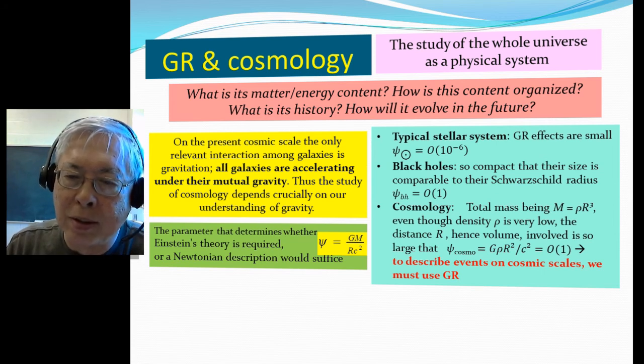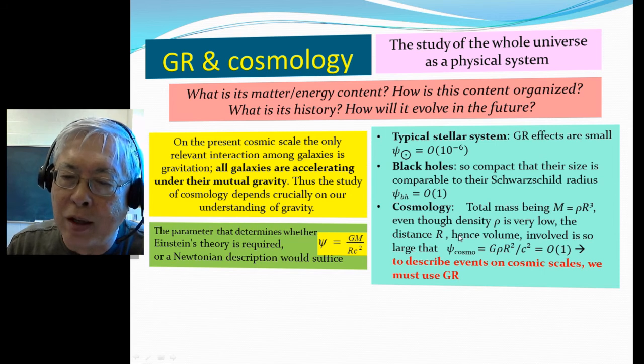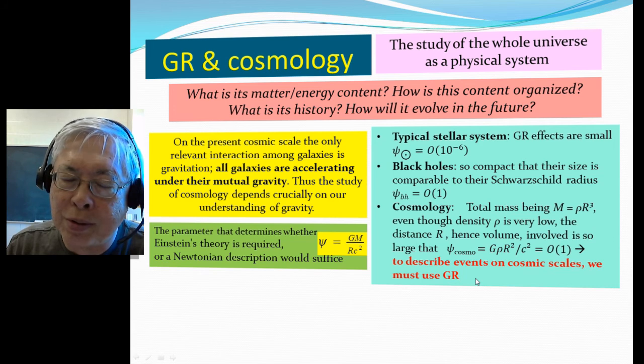And same with cosmology. The total mass is density times the volume r cubed. So even though the density can be very low, the distance is so large, so therefore, the volume is so large, you still get this parameter, it can be order one. Okay. So, to describe events on cosmology scale, we must use general relativity.